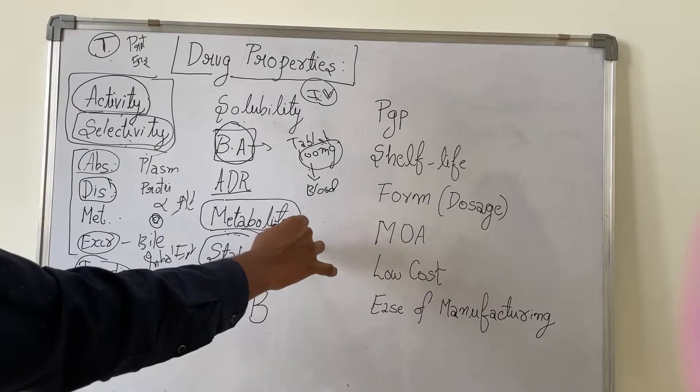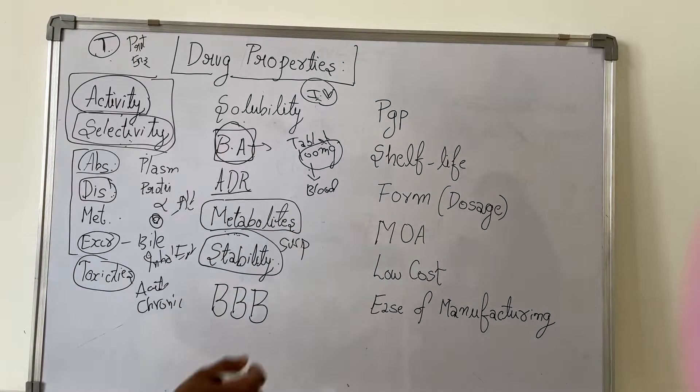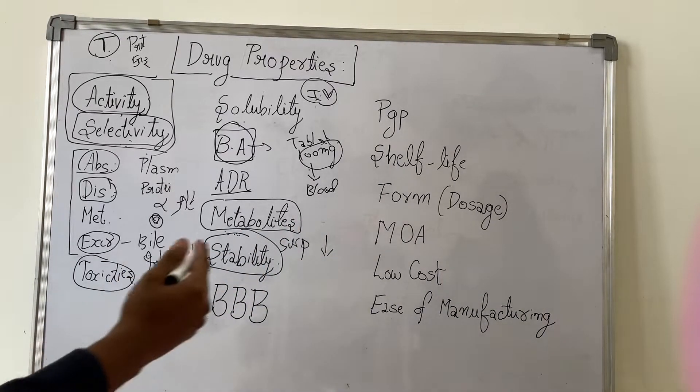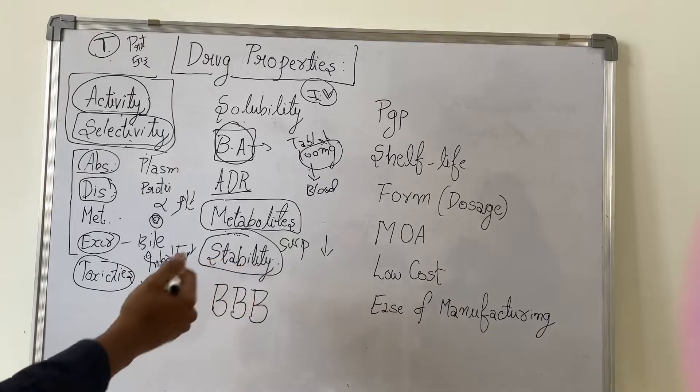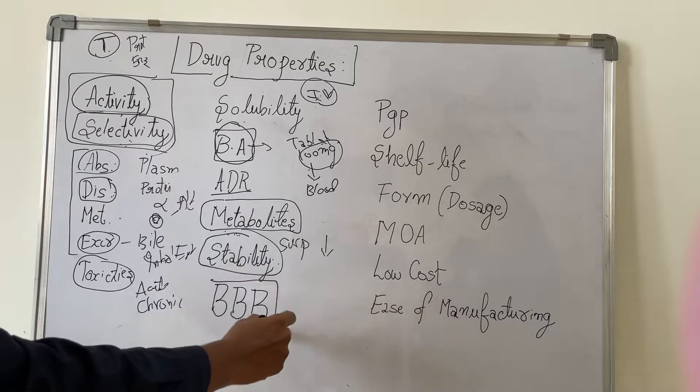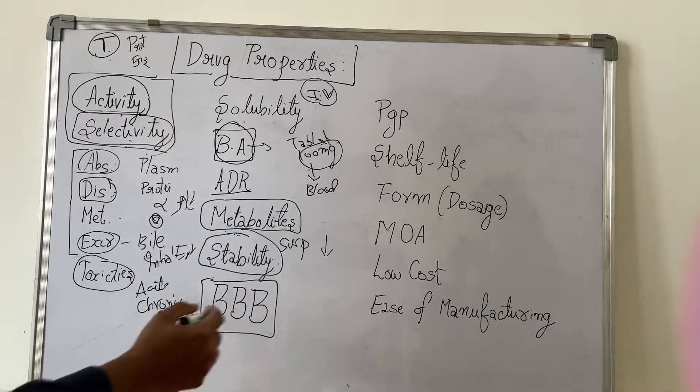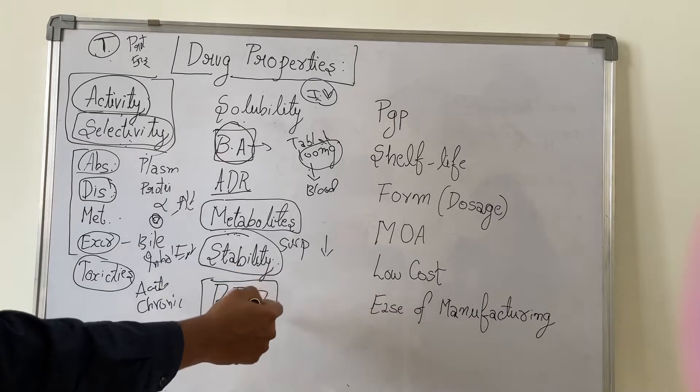We need to assess the expiry date and see whether it is stable or not. For example, there are suspensions and other types of liquid dosage forms where there is a chance of flocculation or sedimentation. We will assess all these parameters in stability also.